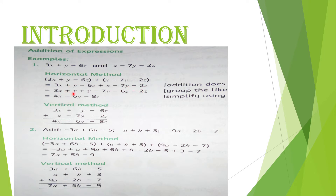3x aur plus x — dono plus hain, 3 aur 1 milake 4x. Phir y wali terms: minus 7y bada hai aur plus y chota — minus 7 mein se plus 1 nikaalen to minus 6y. Aur last mein minus 6z minus 2z — dono minus ke saath hain, milakar minus 8z.